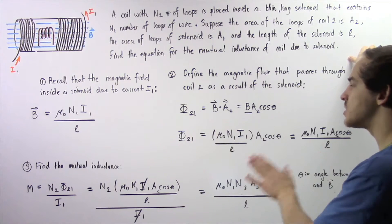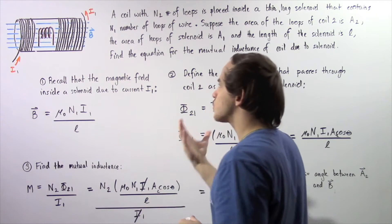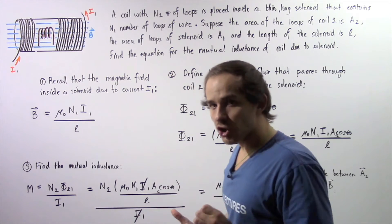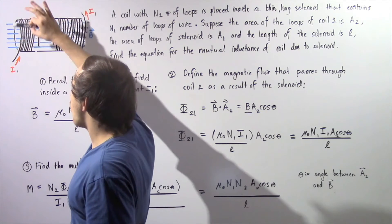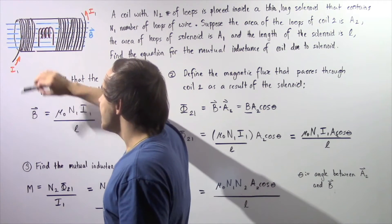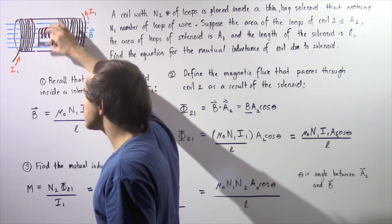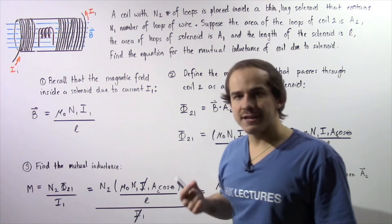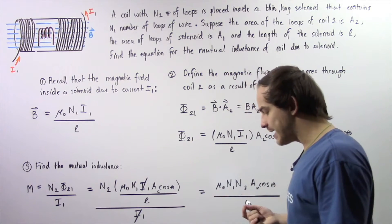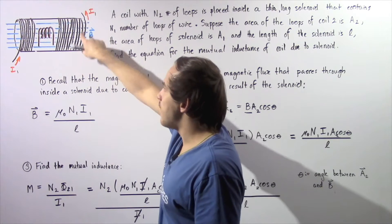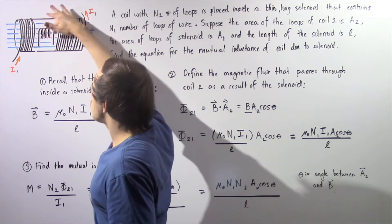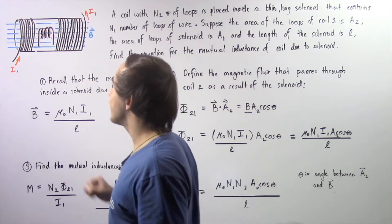Before we begin our 3 steps, let's look at the following diagram that describes what is going on. A changing electric current — an alternating current — is moving through the coils of our solenoid, given by I1. As this electric current travels through the coils of the solenoid, it creates a magnetic field, and that magnetic field is changing because our current is also changing over time. This change in magnetic field is shown by the blue magnetic field lines, and some of these field lines will travel through the loops of coil number 2 placed inside the solenoid.